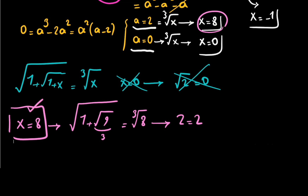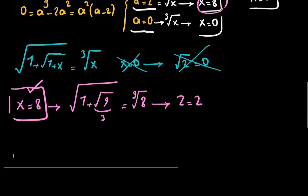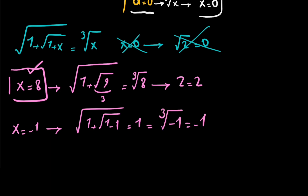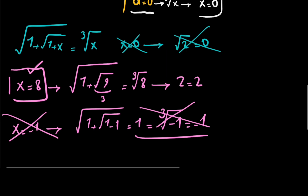Checking the last one, x equals negative 1: on the left side, we get 1 plus square root of 1 minus 1, which equals square root of 1, equals 1. On the right side, cube root of negative 1 equals negative 1. But 1 is not equal to negative 1, so that's not correct. Therefore, the final answer for this equation is x equals 8. If you liked the video, don't forget to subscribe and like, and thanks for watching.